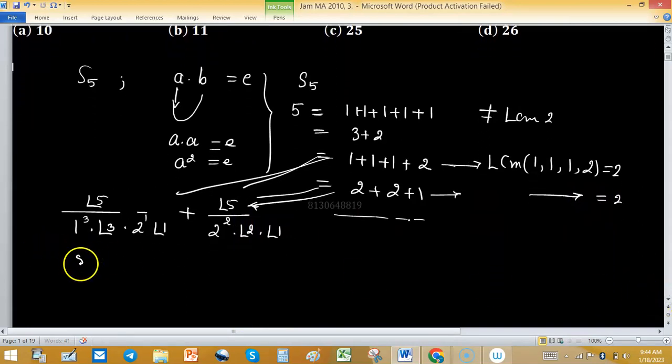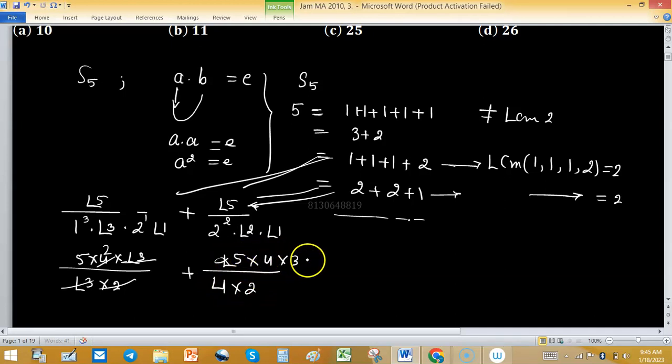Now simplifying these two: 5 factorial I can write as 5×4×3! upon 3!×2. Factorial 3 cancels out and 2 goes into 4, giving 10. Plus 5 factorial upon 4×2, which is 5×4×3×2 upon 8. This simplifies to 15.